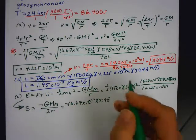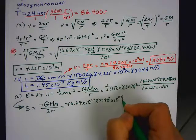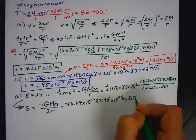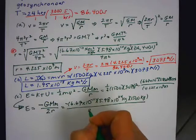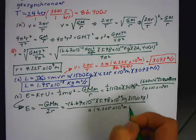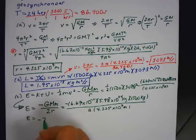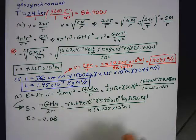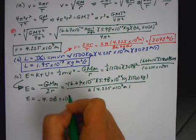Okay. And again, in your notes has this derivation where you're basically simplifying it. Divided by 2 times 4.225 times 10 to the 7. So either way you do it, your final answer comes out to be negative 7.08 times 10 to the 9 joules.